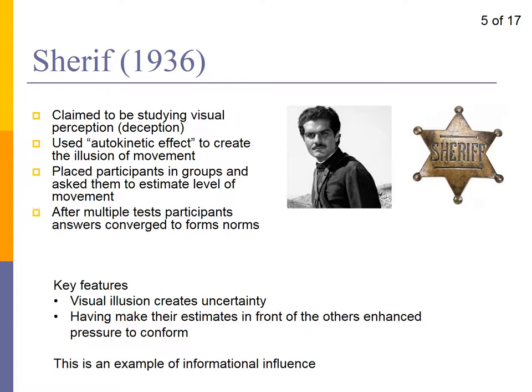However you pronounce their name, Sherif carried out what has become one of the iconic studies in this area of psychology. They used the auto-kinetic effect — putting people in a dark room and asking them to judge how much a light was moving, not just whether it moved but what distance it travelled. What Sherif found was that if everybody was asked this question on their own, they tended to come up with very different answers. But when you put people all in the same room together, both in terms of viewing the dot and giving their judgement about how much it moved, Sherif found that gradually their answers started to converge, as if each person was listening to the others and adjusting their own answer.